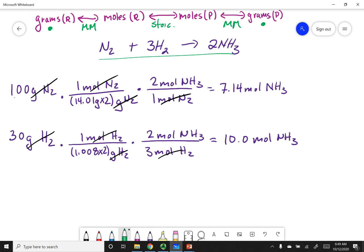What I did was go from grams, used the molar masses to get to moles of reactant, then used stoichiometry to get to moles of products. What I can see is 7.14 is less than 10, so I'm not able to make any more than 7.14 moles of NH3 because I'm going to run out of N2. So N2 is my limiting reagent.